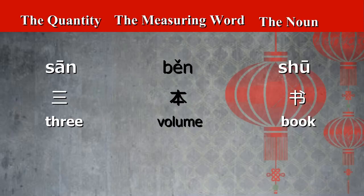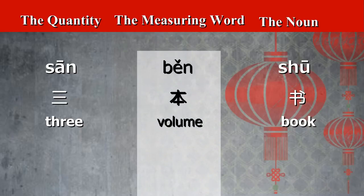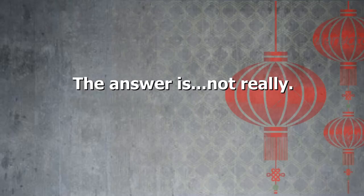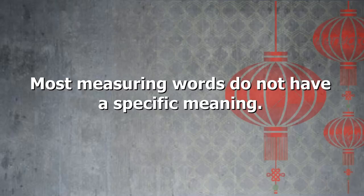With the same structure as an uncountable noun, the measuring word ben is in between the quantity three and the noun book. Again, in Chinese a measuring word is always in between a quantity and a noun. You might think the measuring word ben should contribute some meaning to this phrase — the answer is not really.